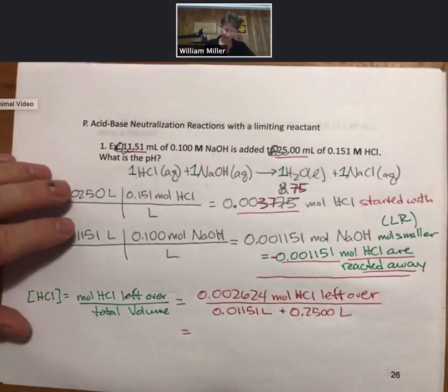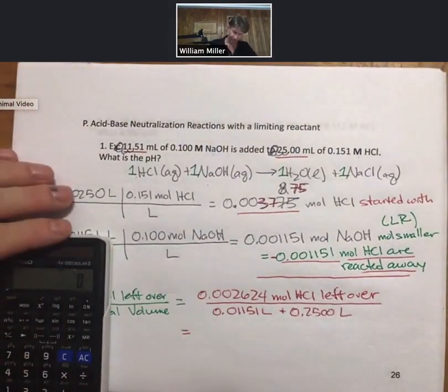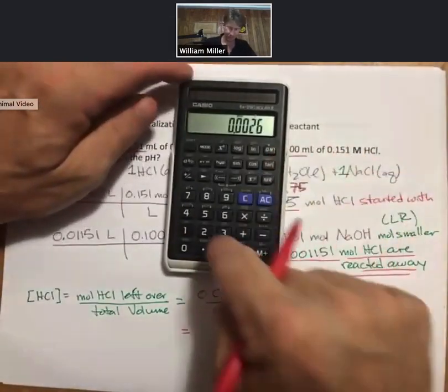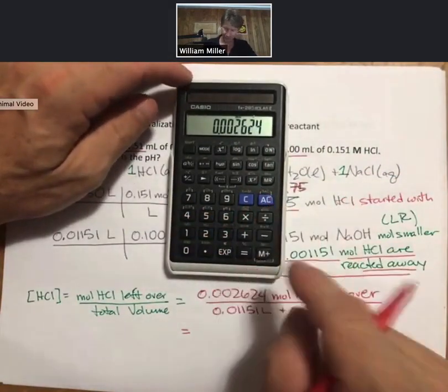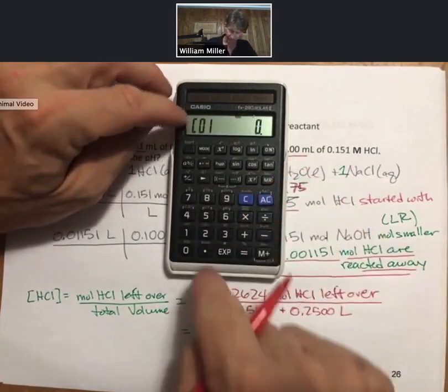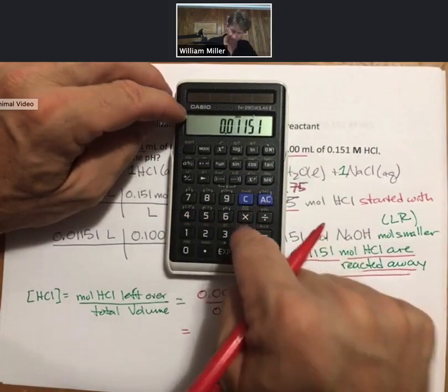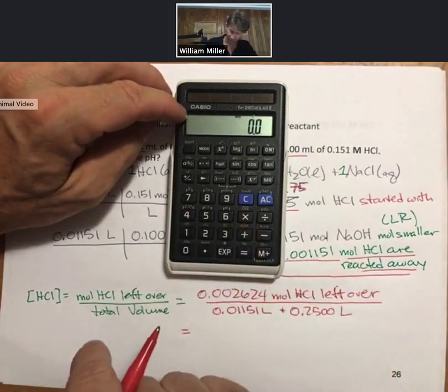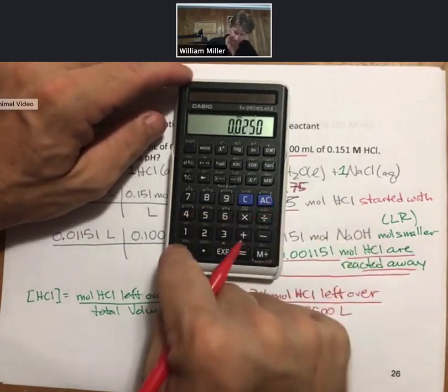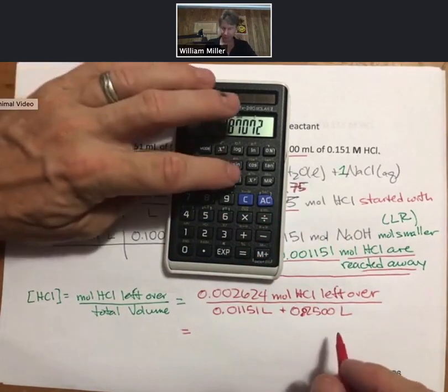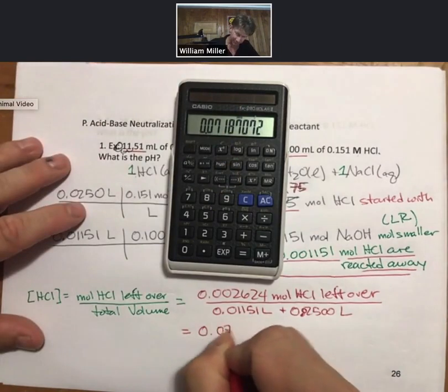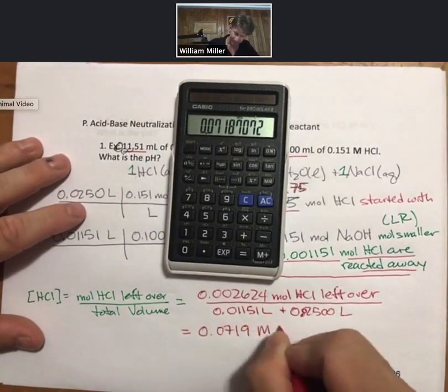I can now multiply this out. 0.002624 divided by—and if I'm going to do addition in my denominator I better set up my parentheses—0.01151 plus 0.02500. And I forgot to close my parentheses but it closes it for me. It did all my math: 0.0719 molarity HCl.